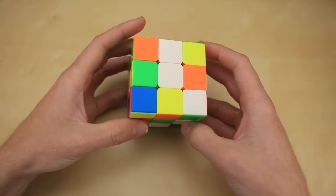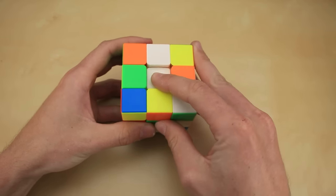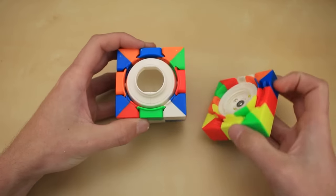And there we have it. Now that the cube is in our secret position, we can go ahead and pop down the white center, and unscrew it, and get to what's inside.